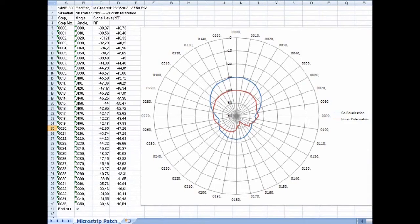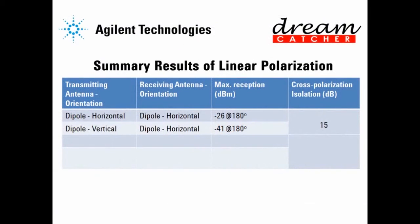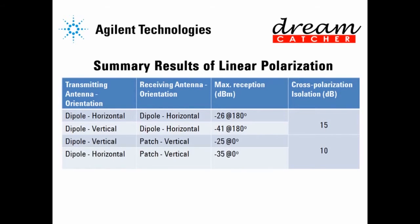Again, you will observe the reflection effect from surrounding objects at the 90 and 270 degree areas, which are the null lobe directions of the patch antenna. From the four completed measurements: the receiving signal for the dipole in co-polarization mode was about negative 26 dBm, whereas in cross-polarization mode it was negative 41 dBm, giving a cross-polarization isolation of 15 dB. For the microstrip antenna, the isolation is 10 dB. An antenna with a greater value of cross-polarization isolation is preferred, as it can significantly discriminate a cross-polarized signal.